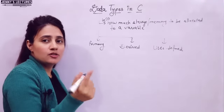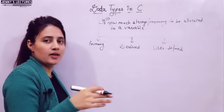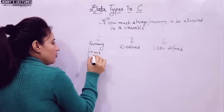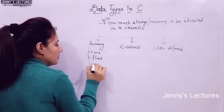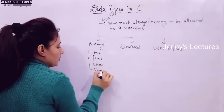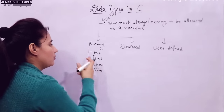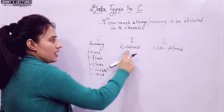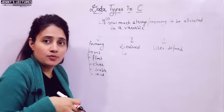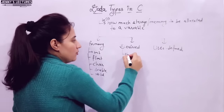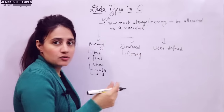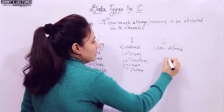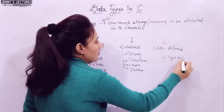Primary data types are also known as fundamental or built-in data types that are predefined in the library. What comes under primary data types? Int, float, char, void — and somewhere double is also written here. Derived data types are derived using primary data types — so here we have arrays, structure, pointer, union. These are derived data types. And user defined data types are typedef and enum.